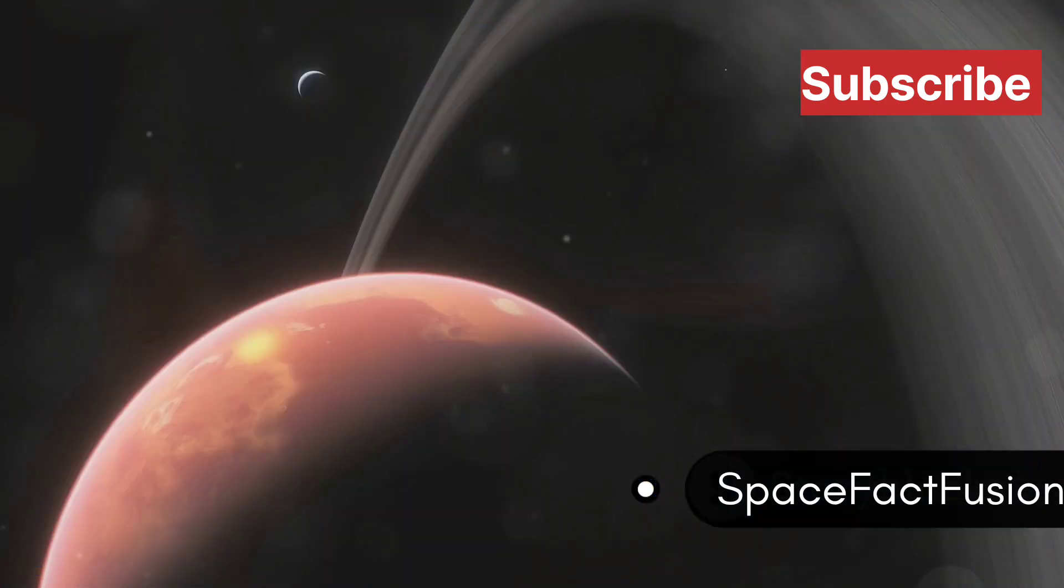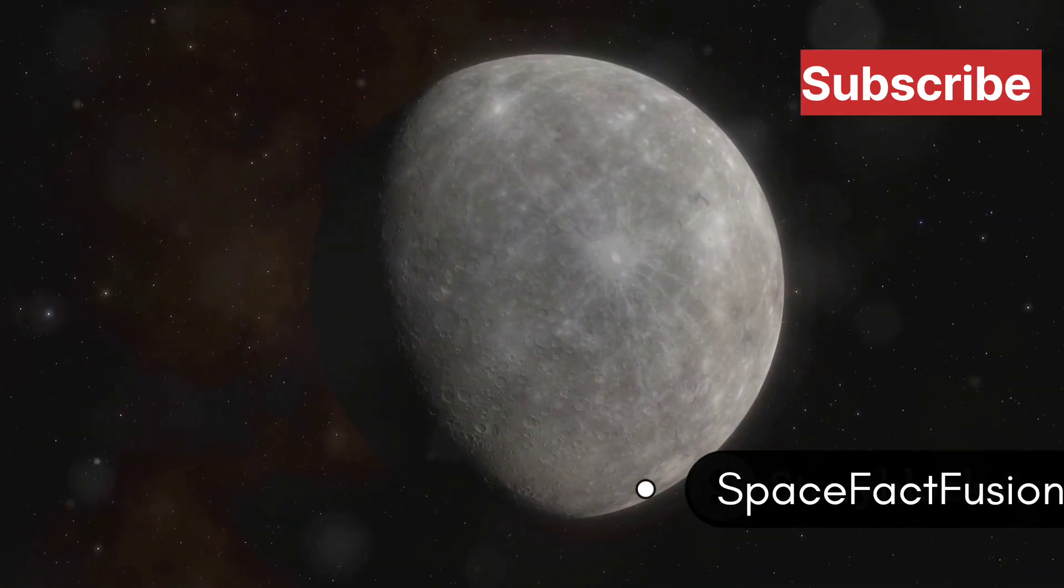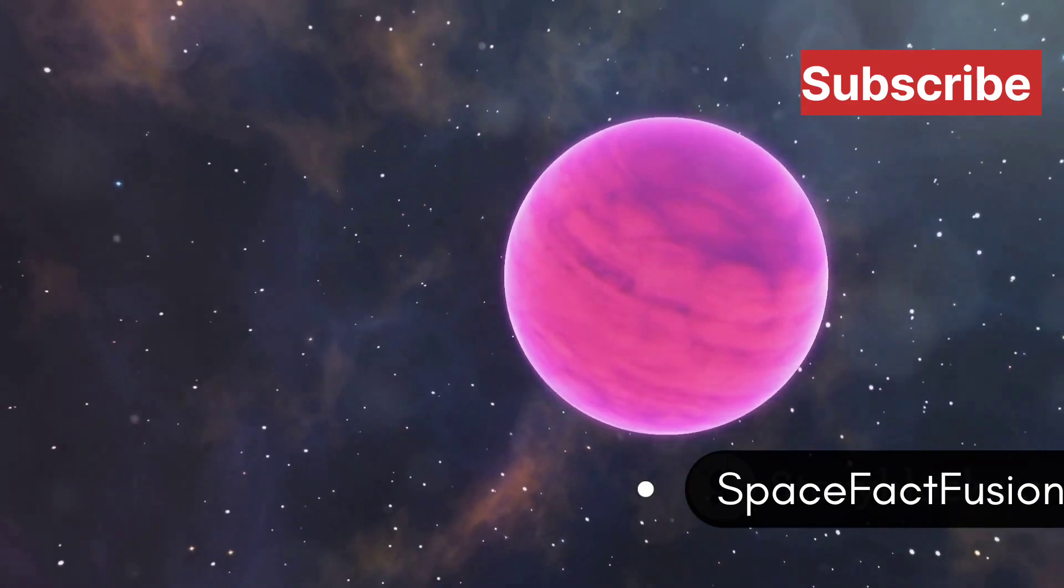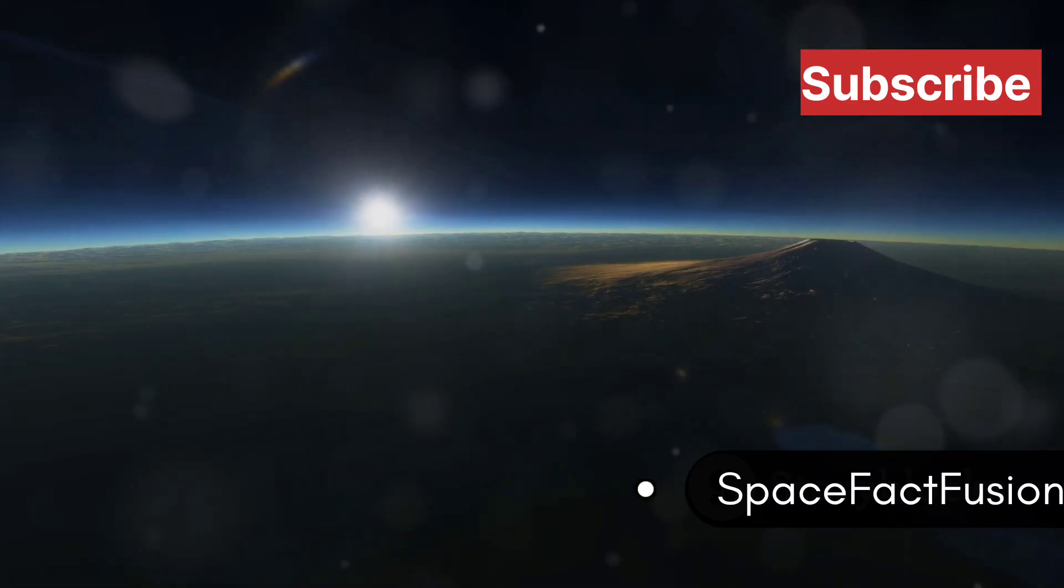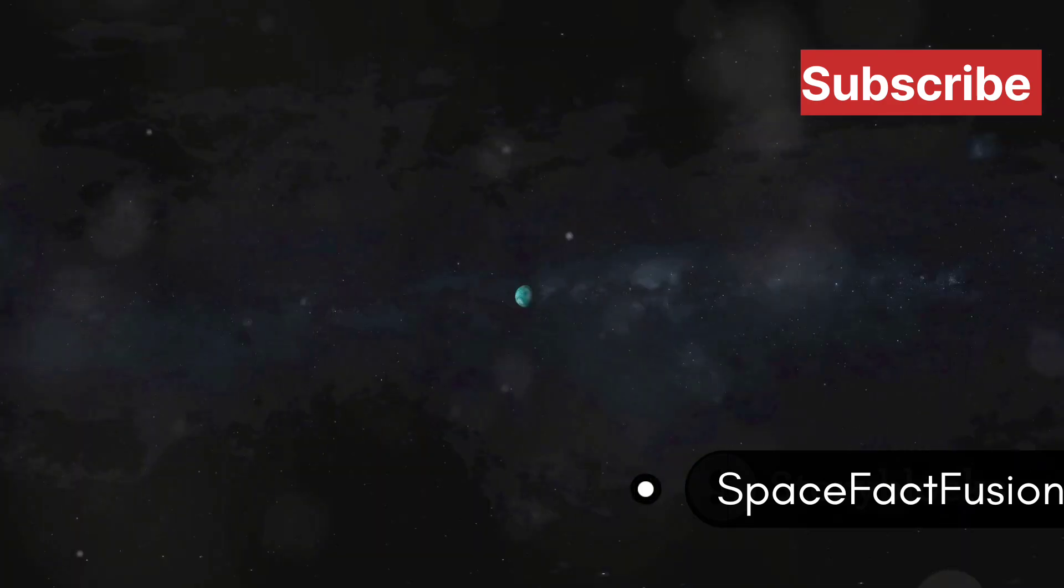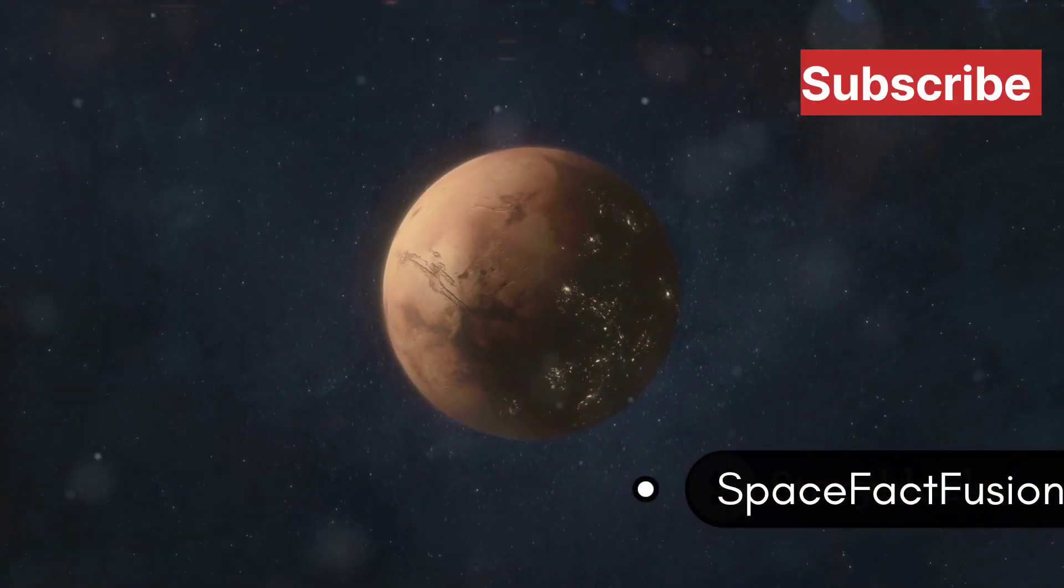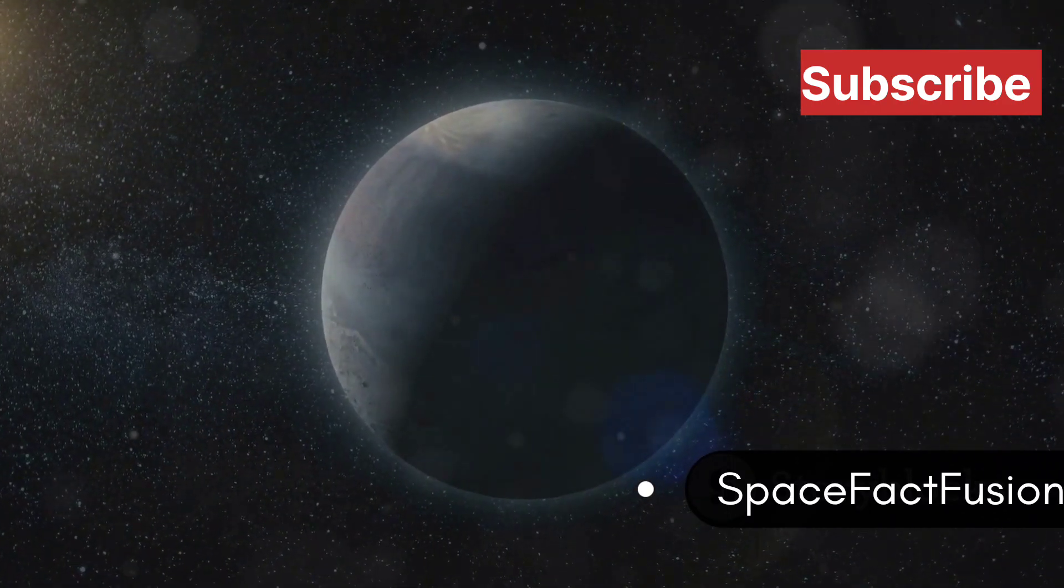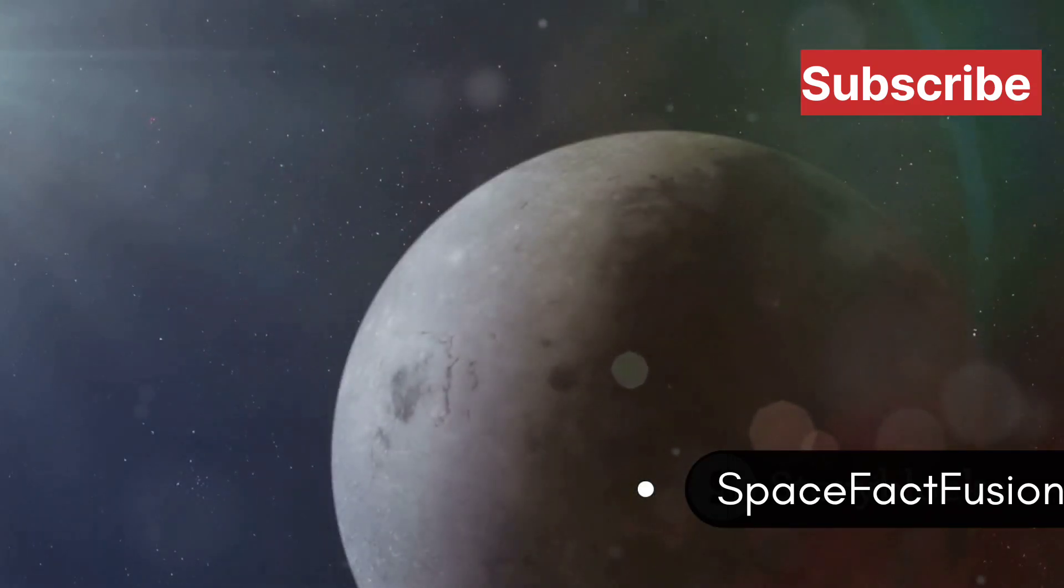Get ready to crank up the humidity as we travel to GJ 1214b, a planet that's essentially a giant sauna floating through space. This water world is enveloped in a thick, steamy atmosphere, making it a prime candidate for the title of most humid planet in the known universe. GJ 1214b is a super-Earth, larger and more massive than our own, but it's anything but Earth-like. It orbits its star, a red dwarf, at a distance that places it well within the habitable zone. GJ 1214b is tidally locked to its star, with one side perpetually facing the furnace and the other shrouded in eternal darkness.